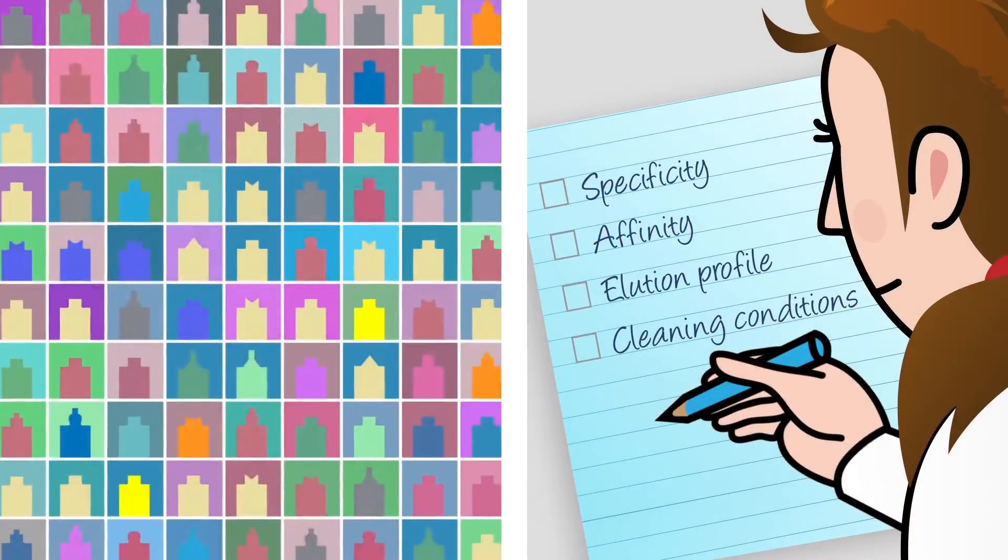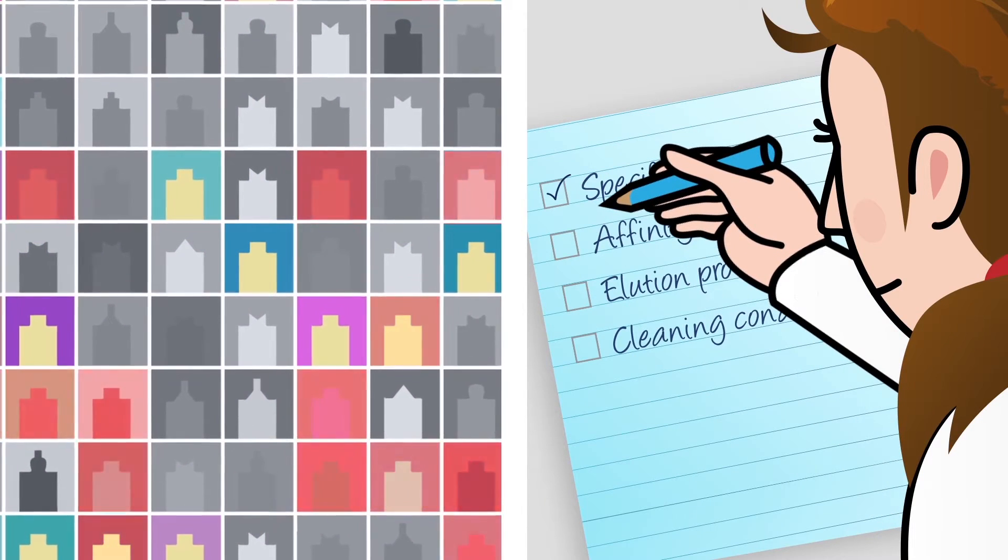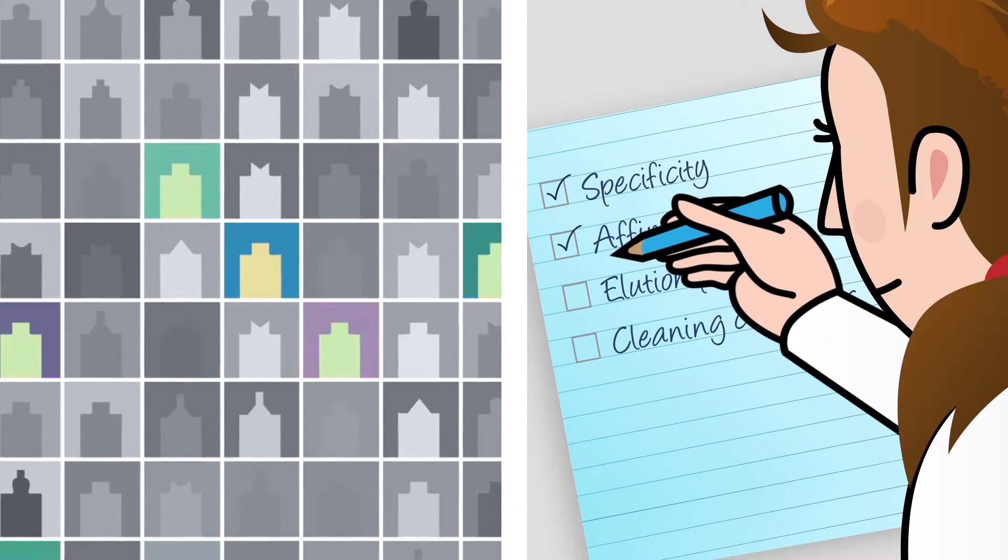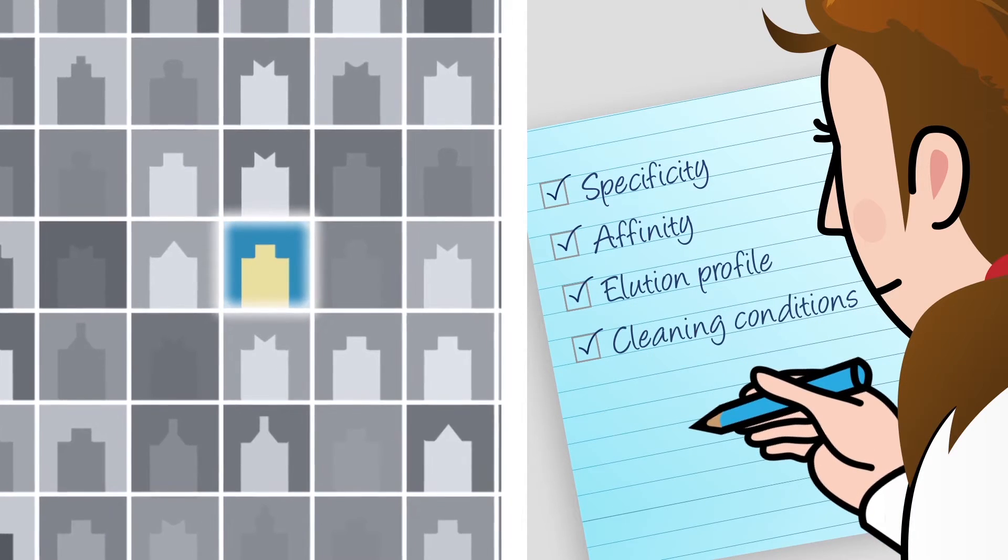Ligands for a specific target molecule are identified from expression libraries, providing an opportunity to select VHH molecules tailored for specificity, affinity, elution profile, and cleaning conditions.